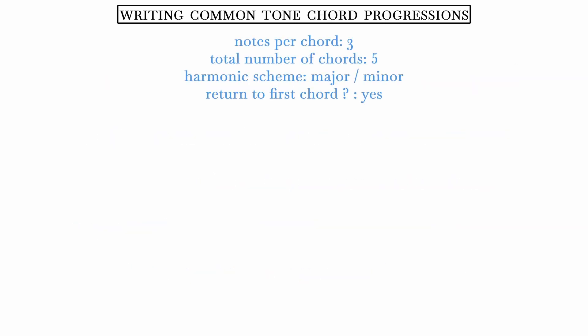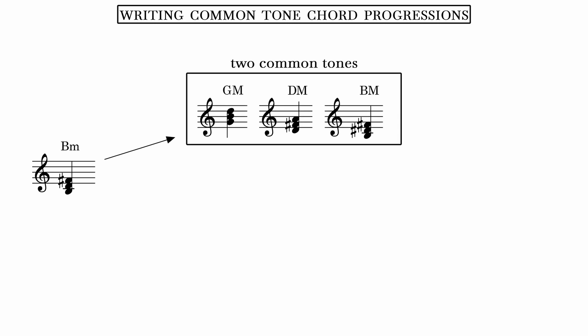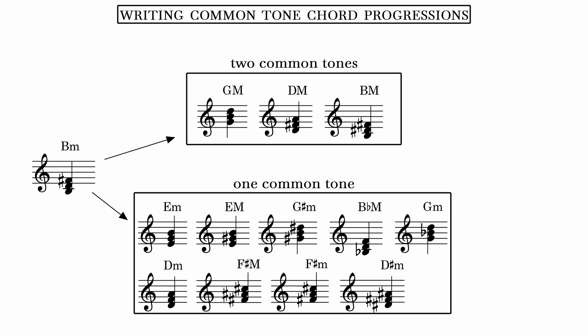They can be built from any size of chord, any total length or number of chords, and they can be based in any harmonic scheme, meaning they don't necessarily need to return to a home key or tonal area. Let me demonstrate. I'll quickly compose a progression using three notes per chord, five chords total, using only major and minor chords. I'll pick a starting triad at random — how about B minor?